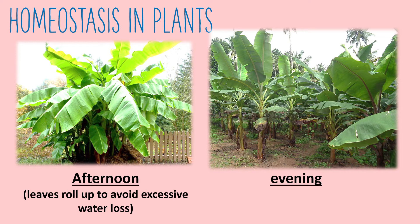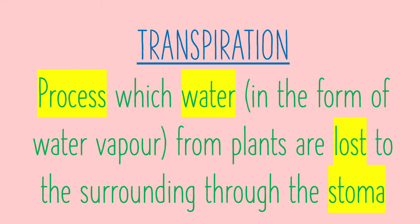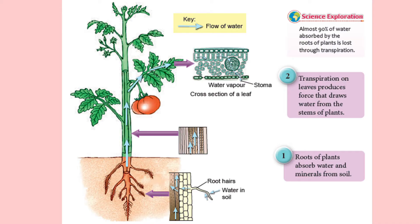Plants lose water to the surroundings through a process called transpiration. Transpiration is the process of losing water from the surface of the plant leaves in the form of water vapor to the atmosphere through stomata. Transpiration helps in cooling down the plants when water gets evaporated. At the same time, transpiration causes the movement of water to occur in plants from the roots to the leaves, which helps to transport water and minerals in plants.